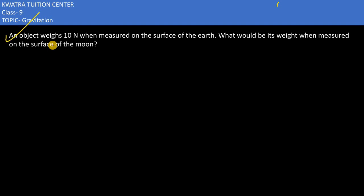Here in this case it says an object weighs 10 newton when measured on the surface of earth. Weight on earth is approximately 10 newton. Then they are saying what would be its weight when measured on the surface of moon. When you measure on the surface of moon, weight on moon is unknown to us.